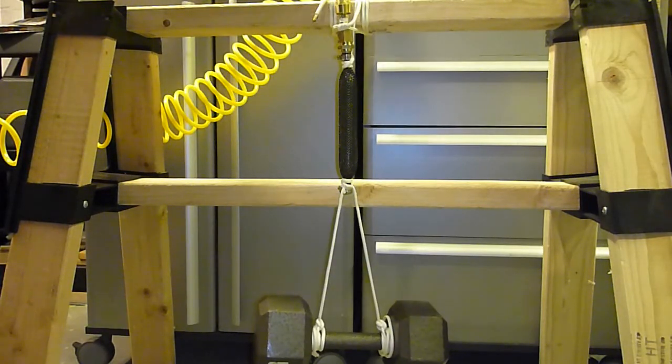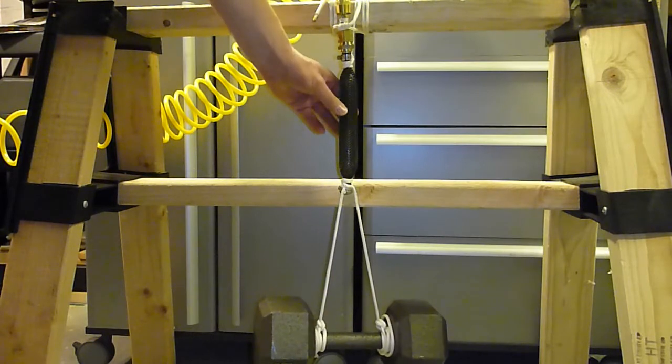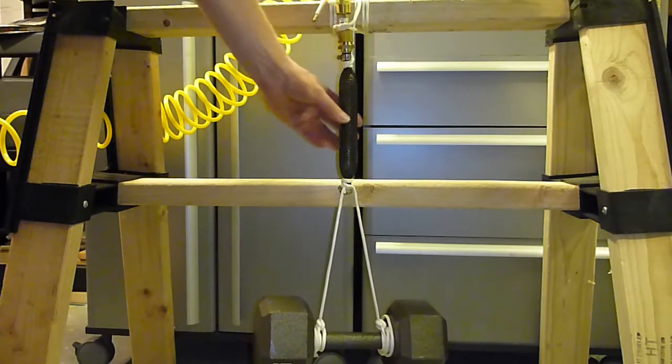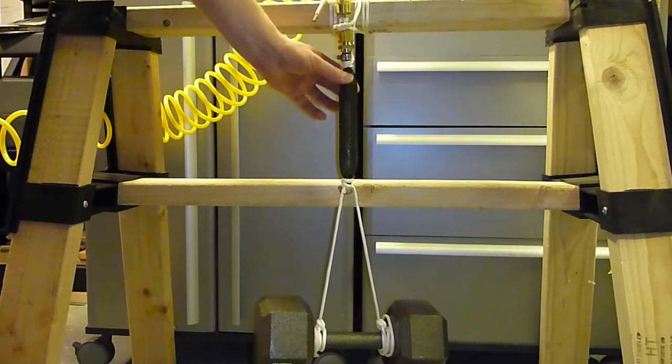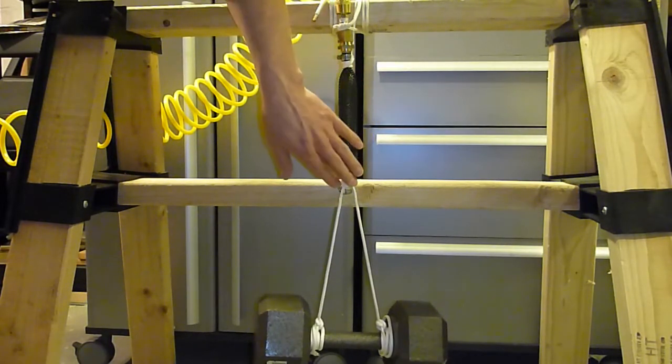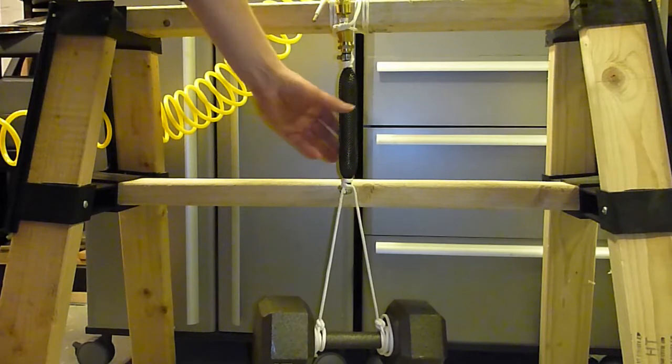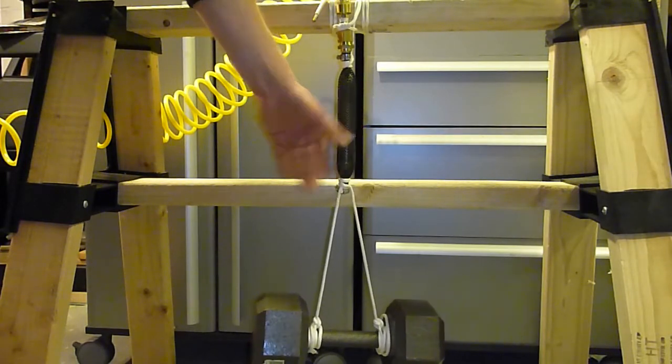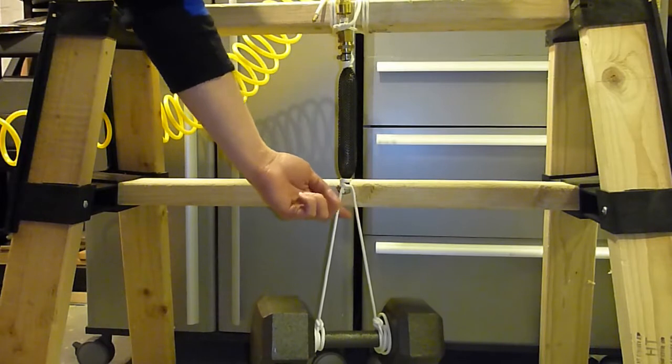So now the air muscle has inflated. The inner rubber part has inflated, pushed out the outer sheath and caused it to contract just like a human muscle. And in the process, it's managed to lift this 25 pound weight about 2 inches.